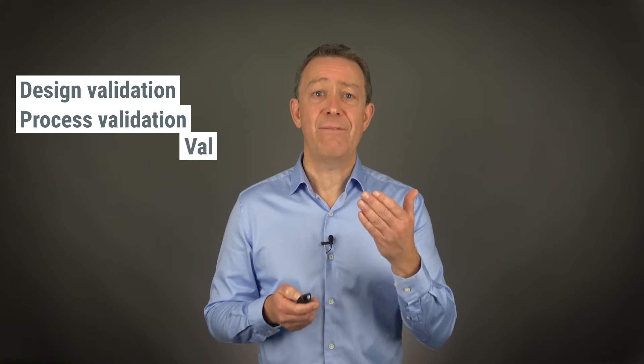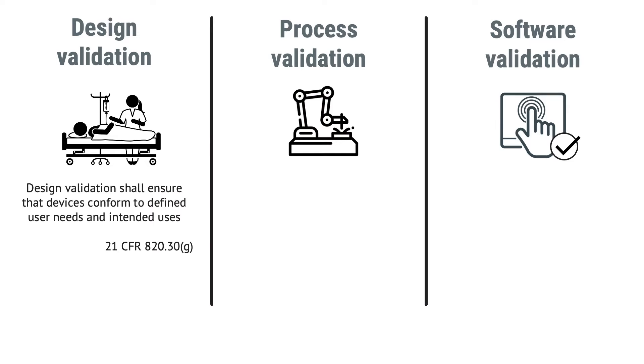There are at least three different types of validation: design validation, process validation, and validation of computer software. Design validation shall ensure that devices conform to defined user needs and intended uses. For example, if you design software that you claim will help elderly patients monitor their blood pressure, you would be doing some user tests with representative users to see that they understand how to use the software. Design validation is often done in a real or simulated environment.